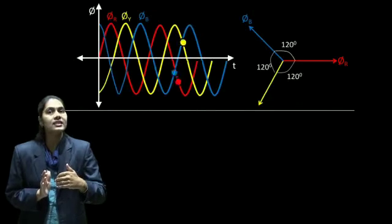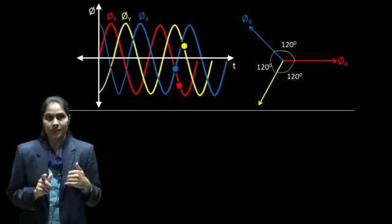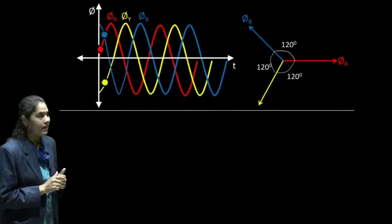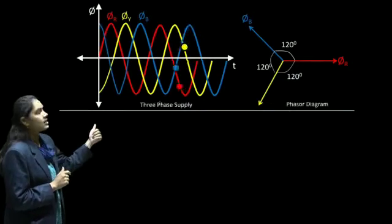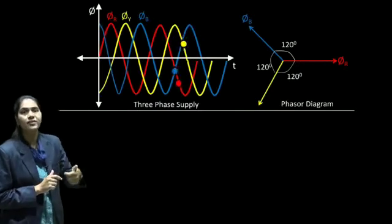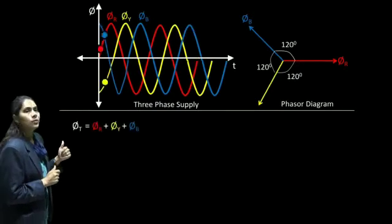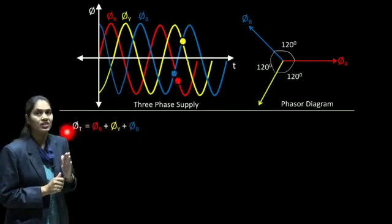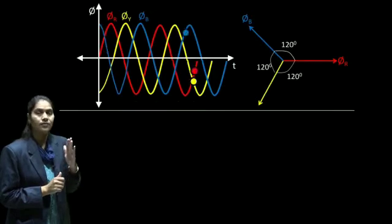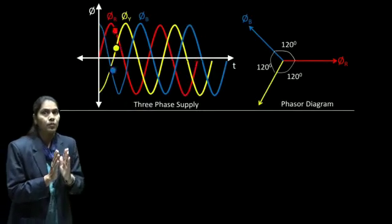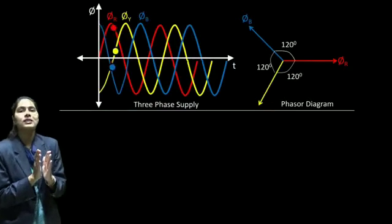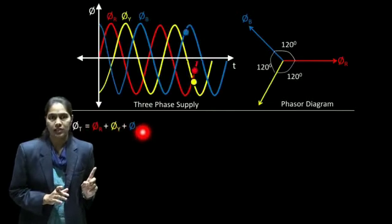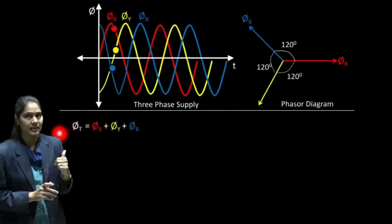As we are saying, this is nothing but rotating magnetic flux. To check this, we consider the waveform and phasor of flux. On this flux waveform, we will consider different instants and at each instant we will check the flux. At the first instant, we will check what is the magnitude of φR, φY, and φB. The resultant flux is φR plus φY plus φB — but this is not arithmetic addition; this is phasor addition.